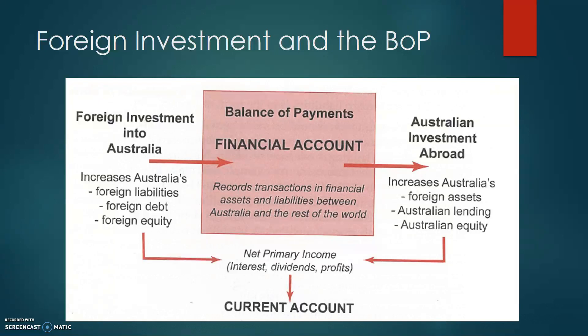The important thing to identify is the link between foreign investment and the balance of payments. The flowchart in your textbook shows this connection well. Foreign investment into Australia increases Australia's foreign liabilities, and those flows are recorded in the financial account. Australian investment abroad is also recorded in the financial account, but as a debit because it is an outflow of funds, while foreign investment into Australia is recorded as a credit — a positive in the financial account.